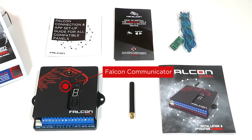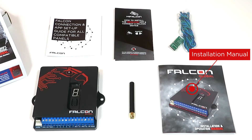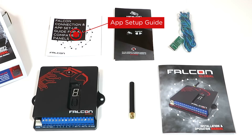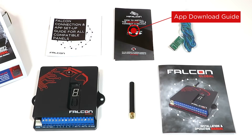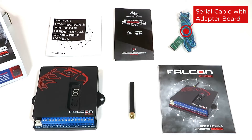When you buy a Falcon Communicator you will also receive a stubby antenna, an installation manual, a setup guide for app functionality, as well as an app download guide. If you've ordered it to use with a range of compatible third-party panels for full app functionality, you will also receive a serial cable with an adapter board or a module for that specific panel.